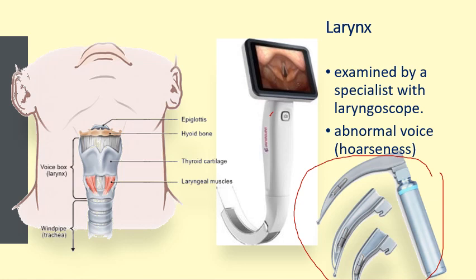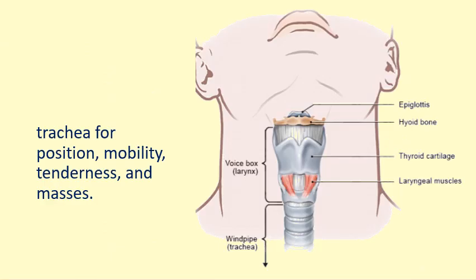When assessing the larynx, you also check for abnormal voice such as hoarseness, which is the initial sign of laryngeal cancer. For the trachea, take note of its location — it should be midline, mobile, with no tenderness and no masses present.